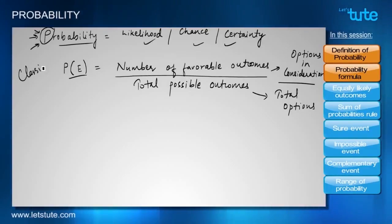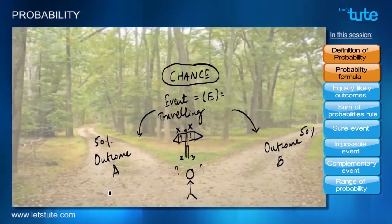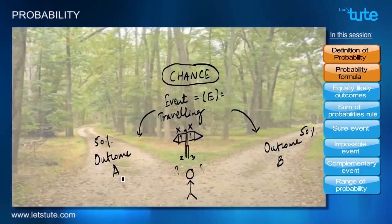This has always been known as the classical way of finding the probability. In case of two roads, the chance of taking road A is 1 in 2, and the chance of taking road B is 1 in 2 as well. That is why we say that these both outcomes are equally likely outcomes.